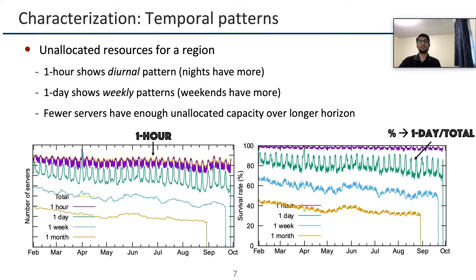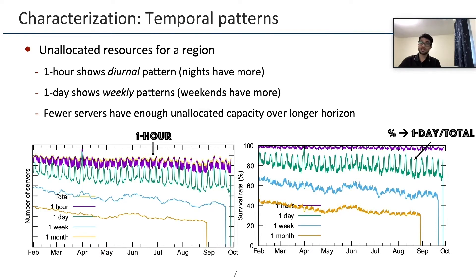One of the key aspects to quantify is how long these spot VMs last before they get evicted. We plot the number of servers that could host a one-core spot VM in a popular region for a minimum duration from one hour to one month, and similarly plot the survival rate. The one-hour and one-day lines show recurrent patterns: the one-hour line shows a diagonal pattern where nights have more unallocated capacity, and the one-day line shows weekends have more unallocated capacity. Spot VMs for longer periods like one month are less available and have low survival rates, indicated by orange lines.